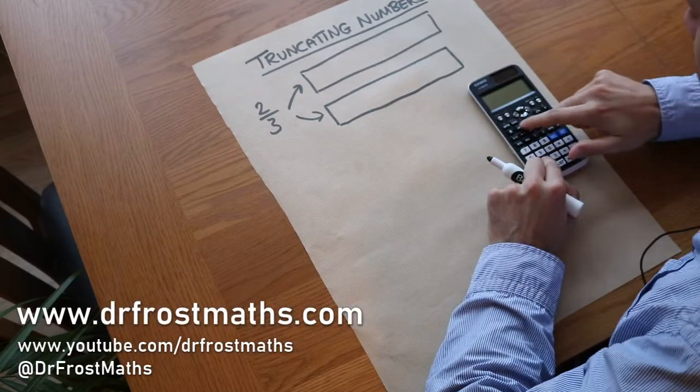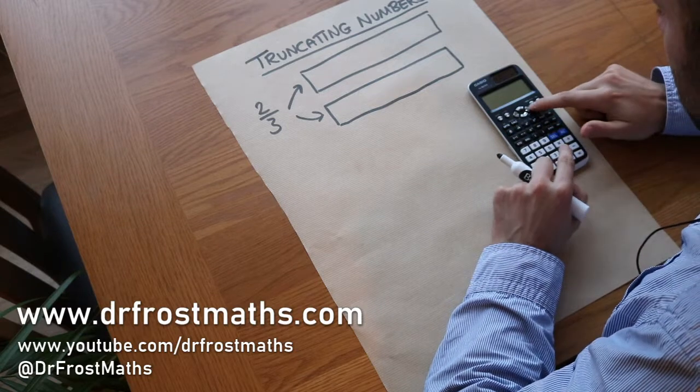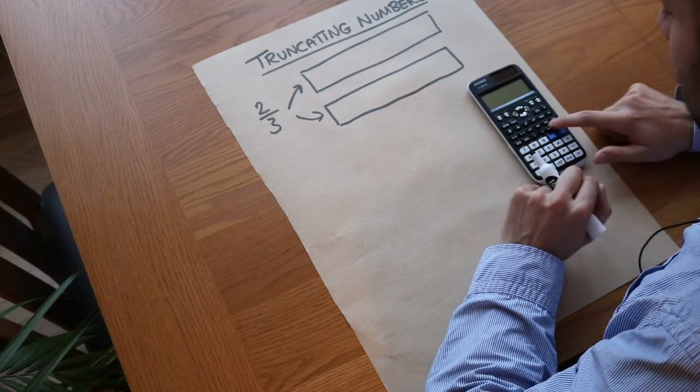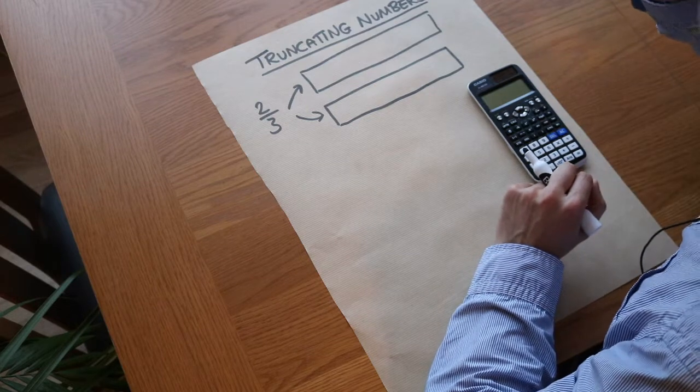Let's say I had the fraction two-thirds and I type that into my calculator, then I press the SD key to convert that to a decimal.